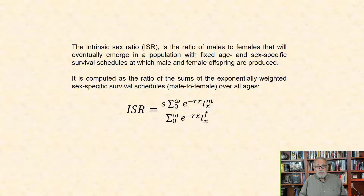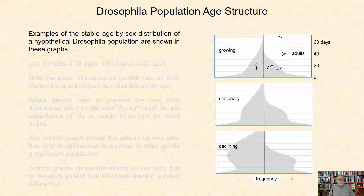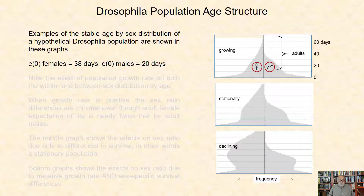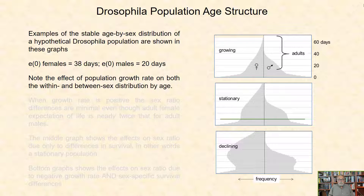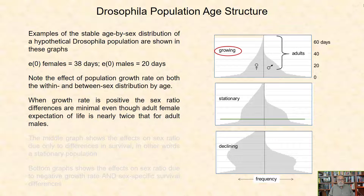Examples of the stable age by sex distribution of a hypothetical Drosophila population are shown in these graphs, with nearly a two-fold difference in survival schedules such that E0 for adult females equals 38 days and E0 for males equals 20 days. Note the effect of population growth rate on both the within and between sex distribution by age. When growth rate is positive, the sex ratio differences are minimal even though adult female expectation of life is nearly twice that for adult males. This is because growth rate skews the age distribution to the pre-adults where sex-specific survival is assumed to be identical.